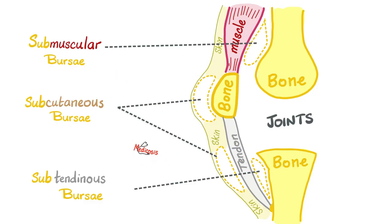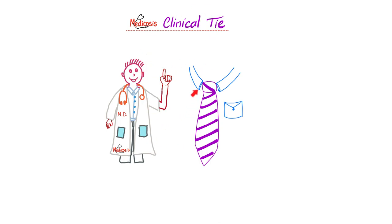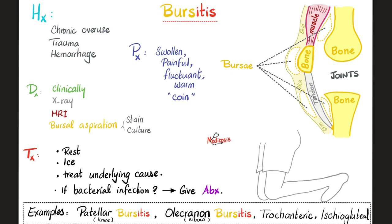And here are your lovely bursae — submuscular, subcutaneous, subtendinous. Pause and review. Now let's take it to the next level: clinical correlation. Bursitis — inflammation of bursa. The history: the patient presents with a history of chronic overuse on that joint, trauma or acute hemorrhage to that joint, or an inflammatory disease such as gout or rheumatoid arthritis, or could be caused by sepsis after a penetrating injury or a spread from a nearby source of infection.